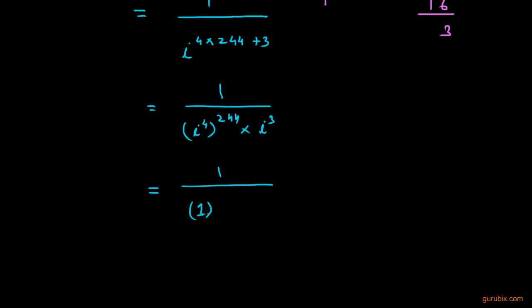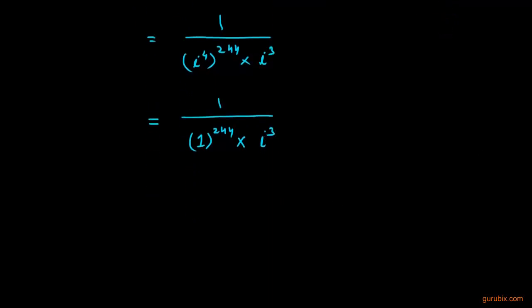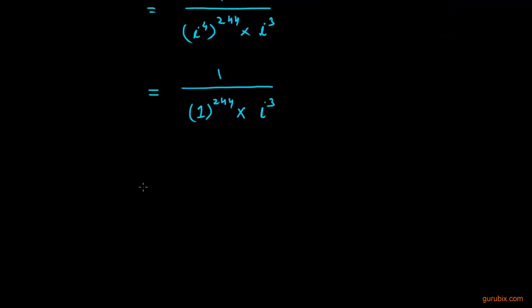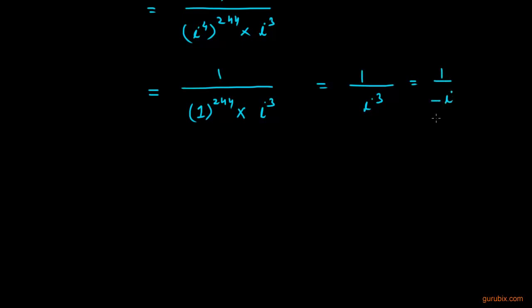So this becomes 1 raised to 244 into iota cubed, which gives us 1 over iota cubed. And iota cubed means negative iota.